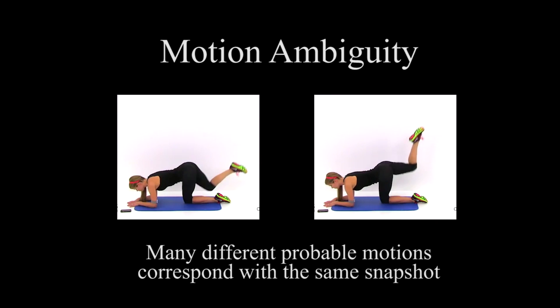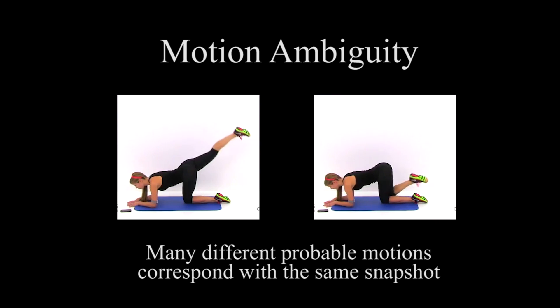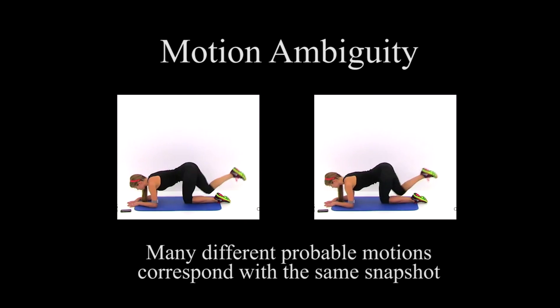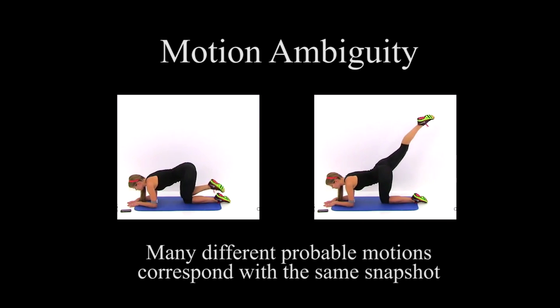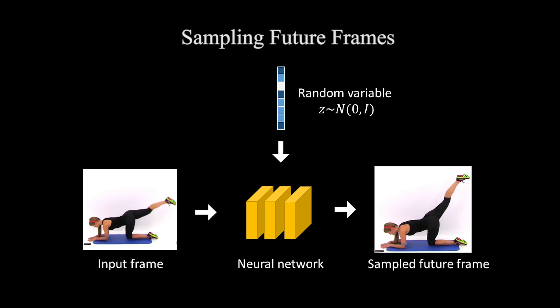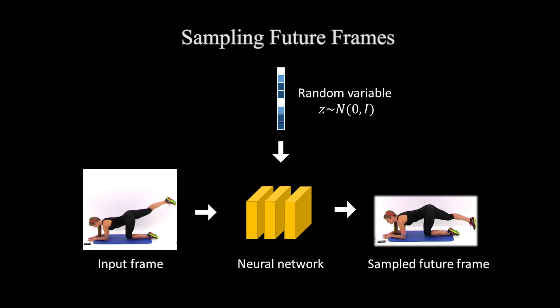In this work, we propose a probabilistic, content-aware motion prediction model that learns the conditional distribution of future frames and allows us to sample and visualize the many possible ways that an input image is likely to change. Our algorithm is based on the variational autoencoder. The network takes the current frame and a random variable z sampled from a Gaussian distribution as input and outputs a future frame. By taking different samples of z as input, the network can generate different future frames.